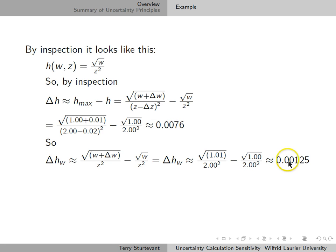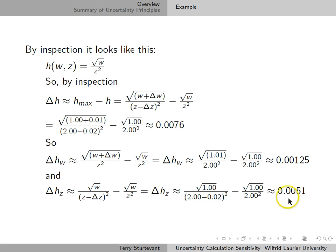Delta h w is 0.001, and delta h z is again 0.005.